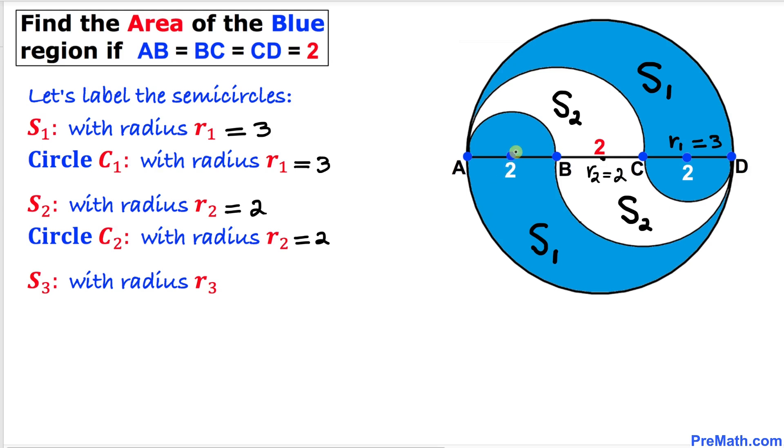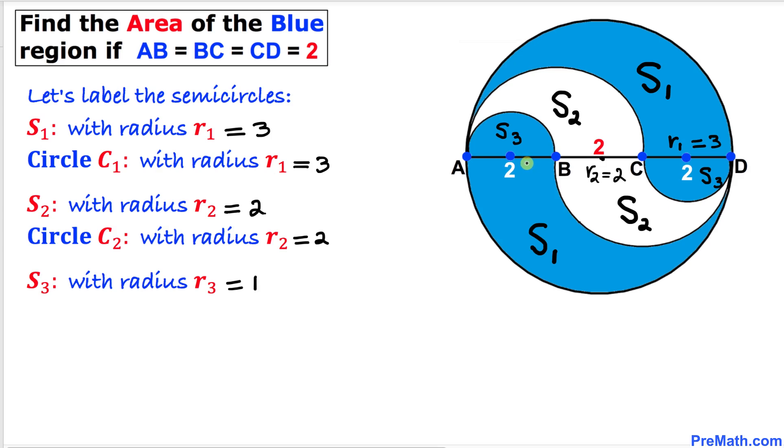Finally, let's focus on this small semicircle. I'll call it S3. Since this is also identical, I'll call this one S3 as well. Its radius is half of 2, which is 1. Therefore, R3 is 1 unit.